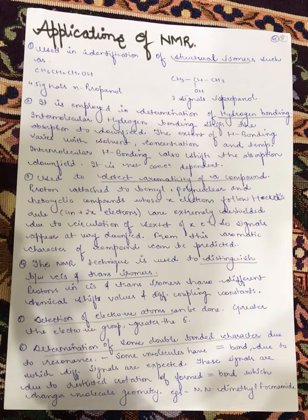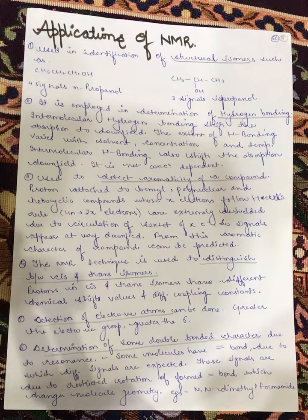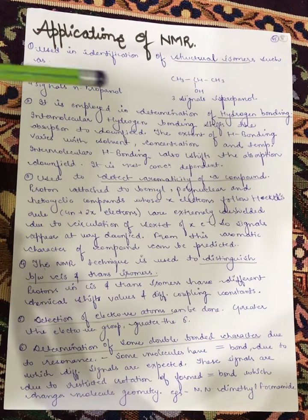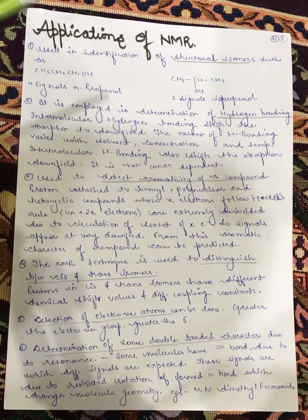NMR is used to detect aromaticity of a compound — we can find out the aromaticity of that compound. NMR technique is also used to distinguish between stereoisomers, and we can find out the geometrical isomers as well.